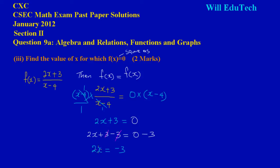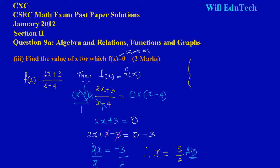So basically to solve for x now, 2 is multiplying x, so we need to move the 2 to the other side. The opposite of multiplication is to divide through by 2. What I do to one side I must do to the other — 2 cancels 2. Therefore, x is equal to negative 3 over 2. So when f of x is equal to 0, the value of x is equal to negative 3 over 2.